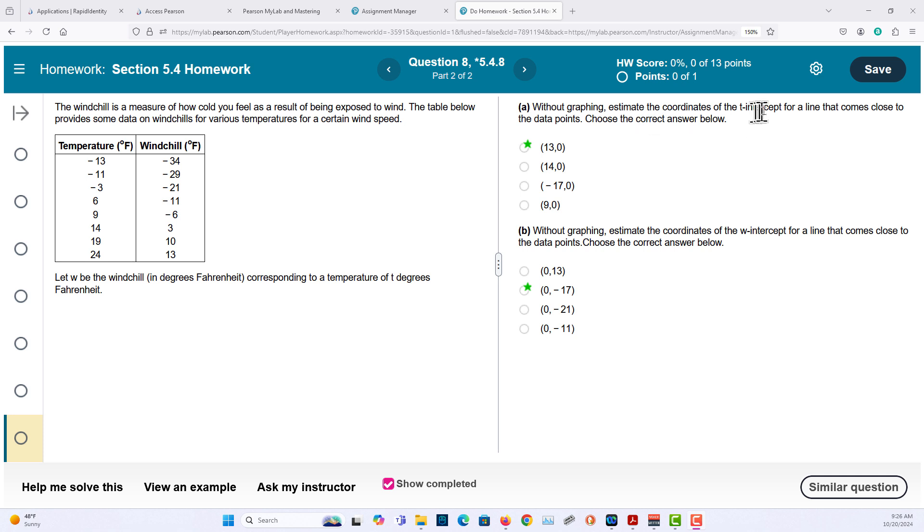Without graphing, estimate the coordinates of the T-intercept of a line that comes close to the data points. Choose the correct answer below. T-intercept here. So let's take a look at an example.